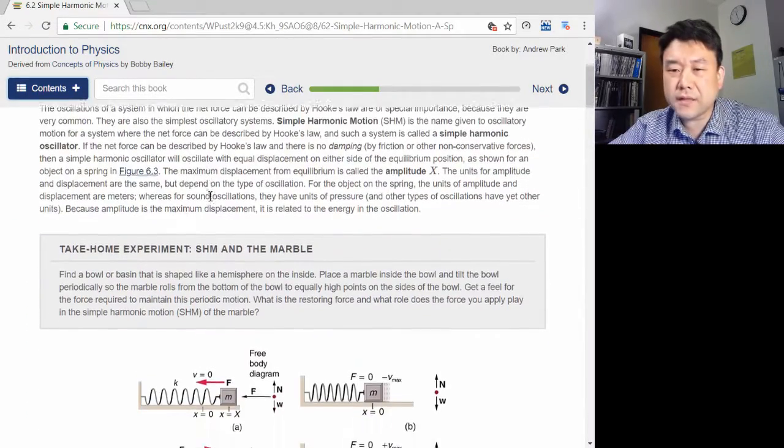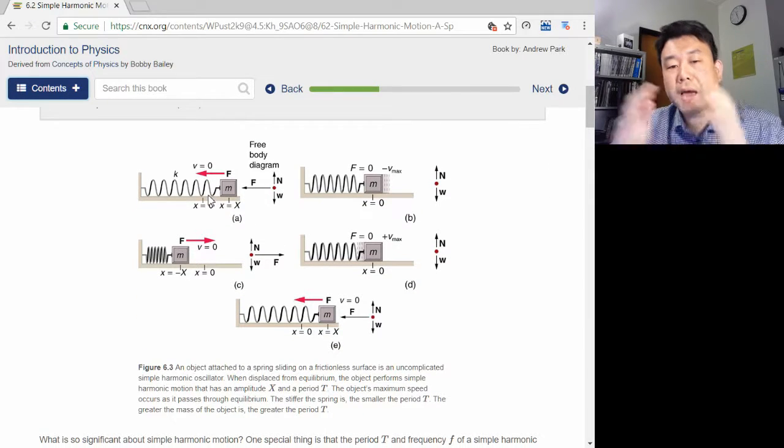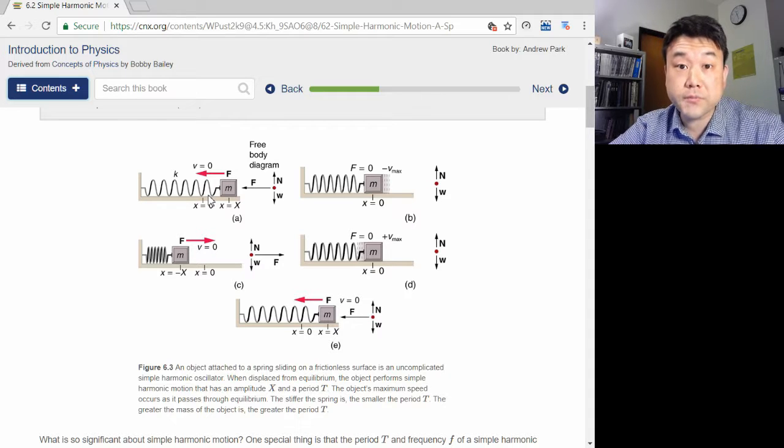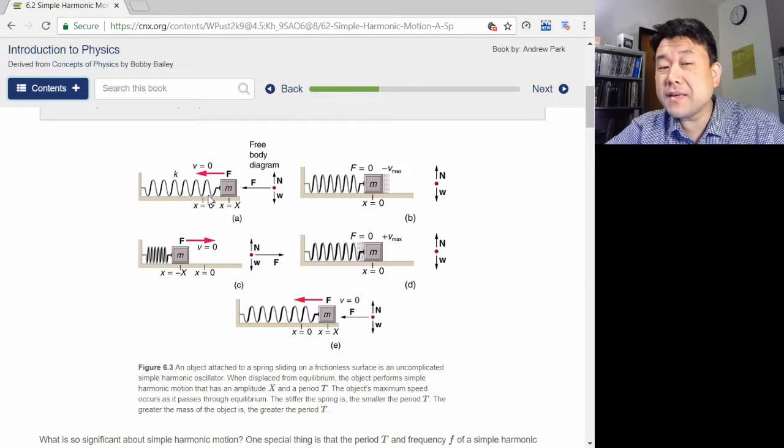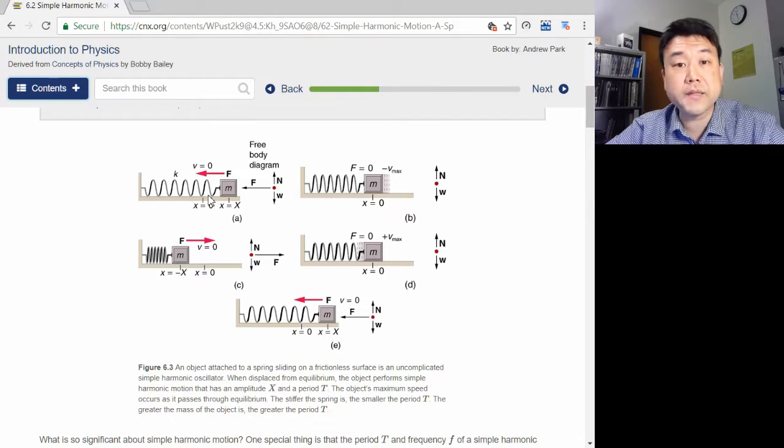There will be a separate video just on simple harmonic oscillators because they are that important. But let me just leave it here. Simple harmonic oscillation describes a wide range of phenomena, from this toy model of mass on a spring to vibrations of atoms in molecules. What that means is the intuition you build here will be useful in many different areas of science and engineering.